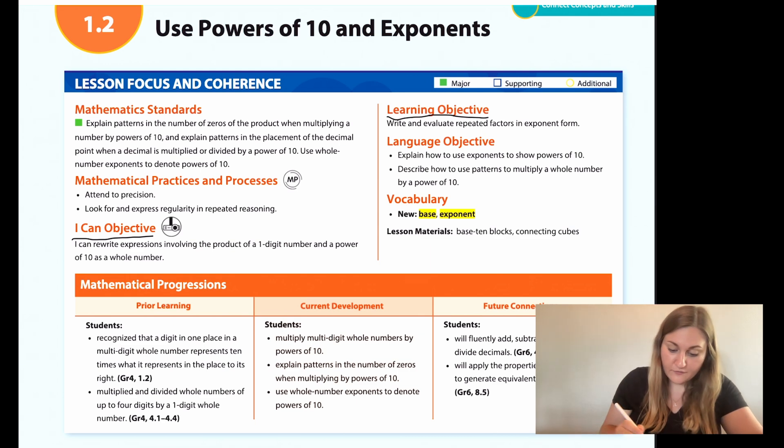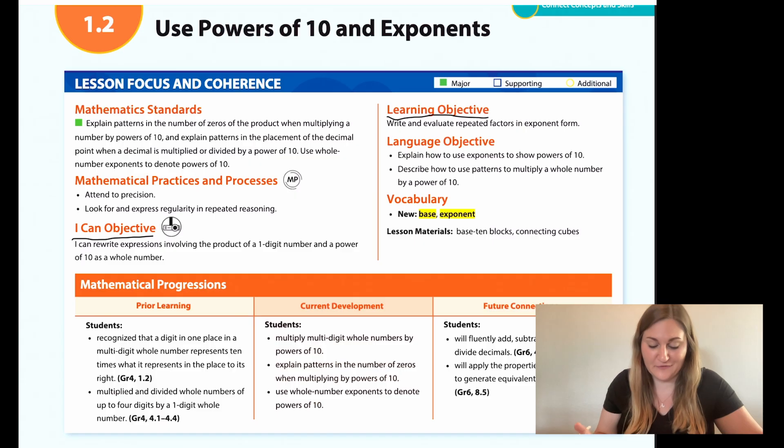Prior learning from 4th grade was the same from Lesson 1. Students recognized that a digit in one place in a multi-digit whole number represents 10 times what it represents in the place to its right. And we learned the opposite is true if you move to the left. The next one is students multiplied and divided whole numbers of up to 4 digits by 1-digit whole numbers.